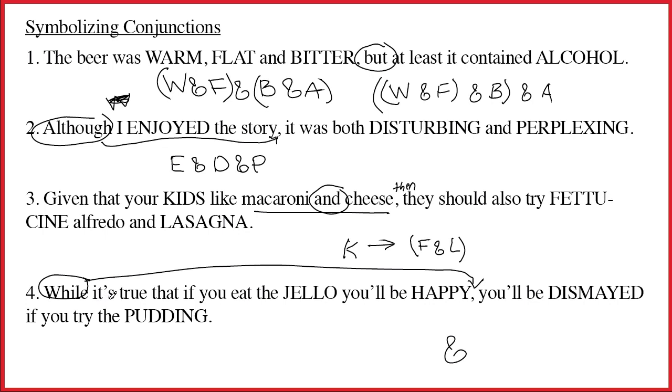The commas are always going to give you the main break when there's just one of them. The sentence in front is, it's true that if you eat jello you'll be happy. It's true that is just kind of like a spacer. It's not doing any work at all. If you eat the jello you'll be happy, so that's J arrow H. And then on the back side, you'll be dismayed if you try the pudding, so that means we've got P arrow D. There's the symbolization.